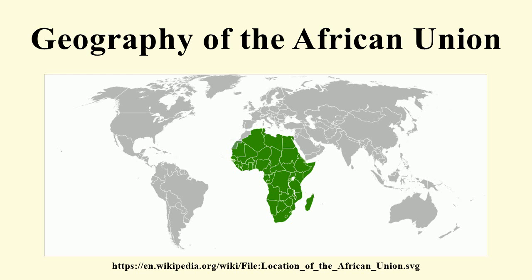On February 27, 1976, the Sahrawi Arab Democratic Republic was declared in Western Sahara as Spain decolonized. This led to a land war between the Sahrawi nationalist Polisario Front and the armies of Mauritania and Morocco. Seychelles joined the OAU on June 27, 1977. Djibouti became independent of France and joined the OAU in June 1980. Zimbabwe joined in February 1982. The Sahrawi Arab Democratic Republic joined the OAU on November 12, 1984, but did not participate in the next two summits due to pressure from Morocco.